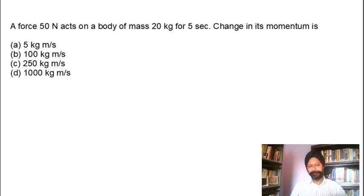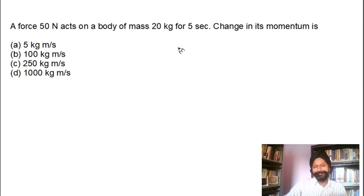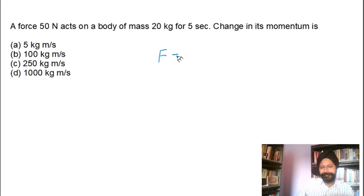Once you have acceleration as 2.5 over 3, plug into F equals ma: F equals 20 times 2.5 over 3. The 20 and 3 partially simplify — calculate to get 50 newtons. The systematic approach works every time. No question is truly difficult if you follow this systematic approach: write what you know, identify what you need, choose the right equation, and solve step by step.